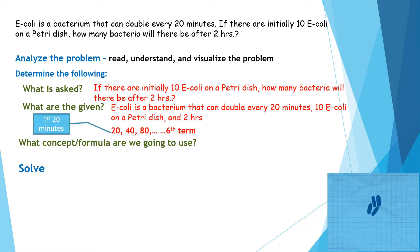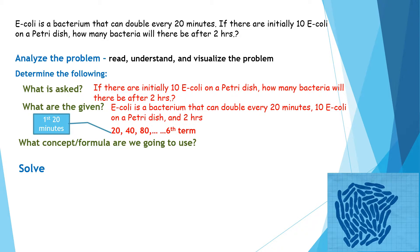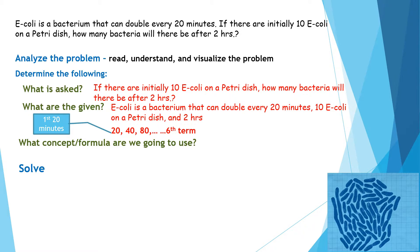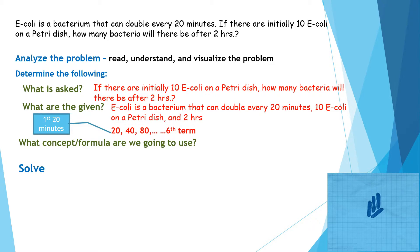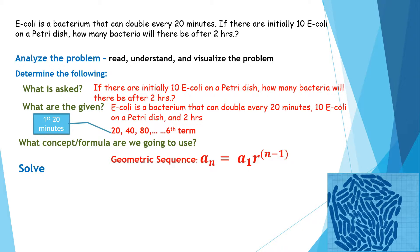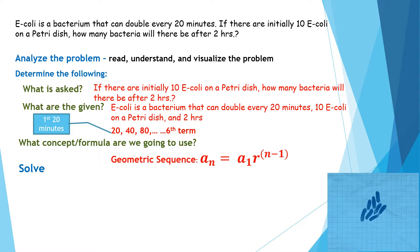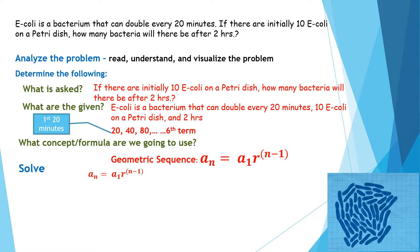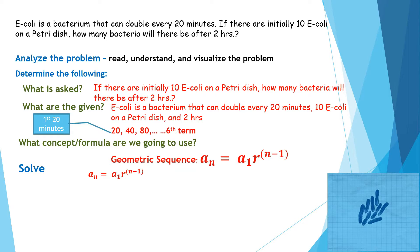The value 20 is the number of E. coli bacteria after the first 20 minutes. In two hours there are six 20-minute intervals, so we go up to the sixth term. The concept and formula we're going to use is geometric sequence: a_n = a_1 × r^(n−1). Now we solve using this formula by identifying the variables.